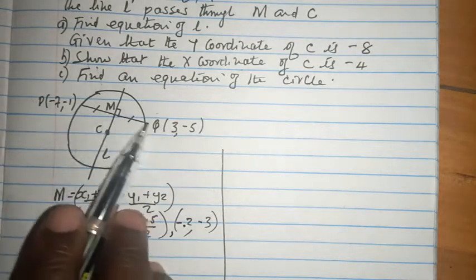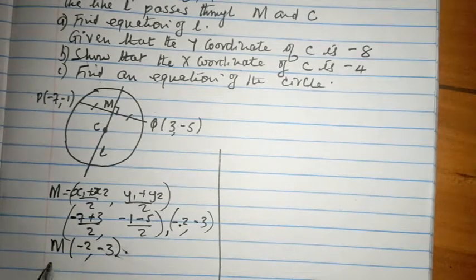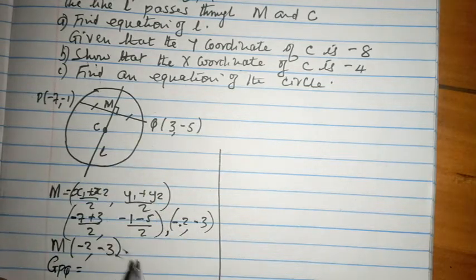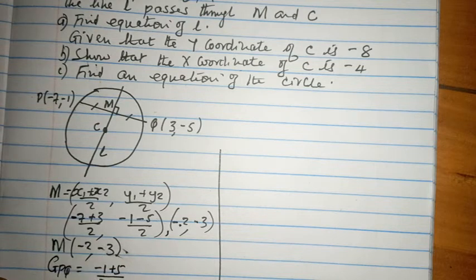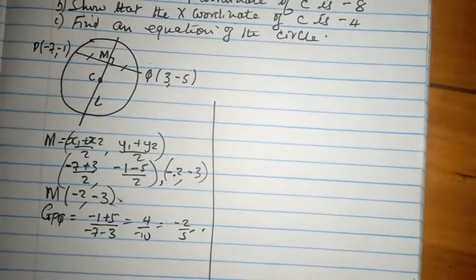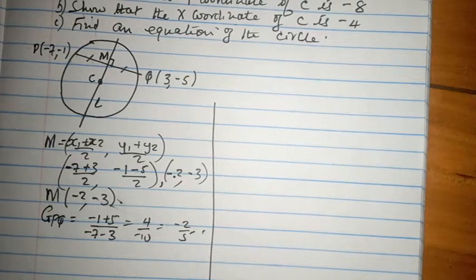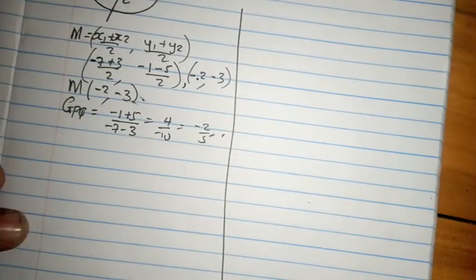Now we can get the gradient of PQ, which is perpendicular to the gradient of L. The gradient of PQ is given by the change in Y: (-1 - (-5)) / (-7 - 3), which is 4 / -10, which simplifies to -2/5.